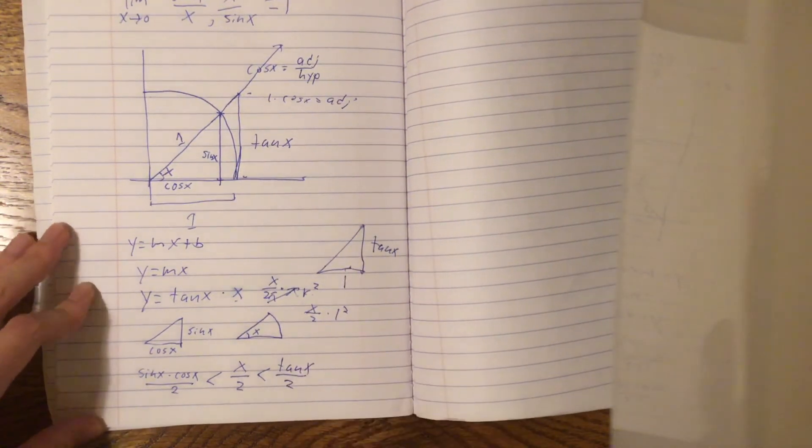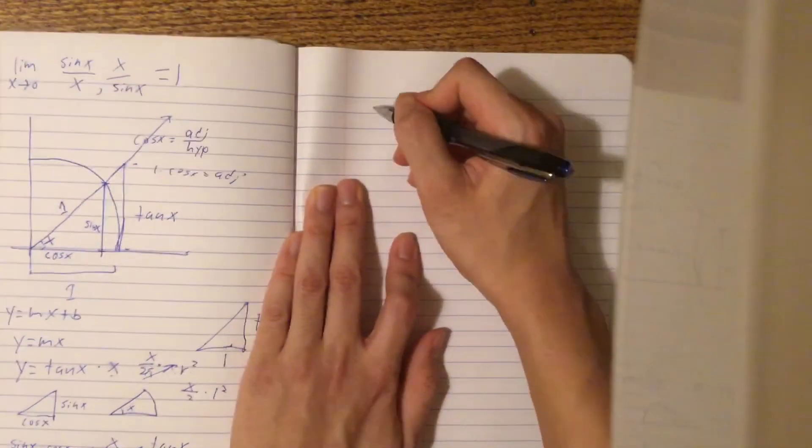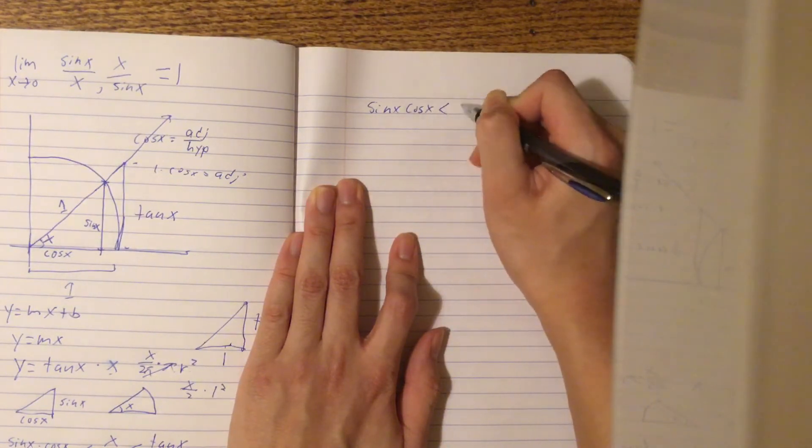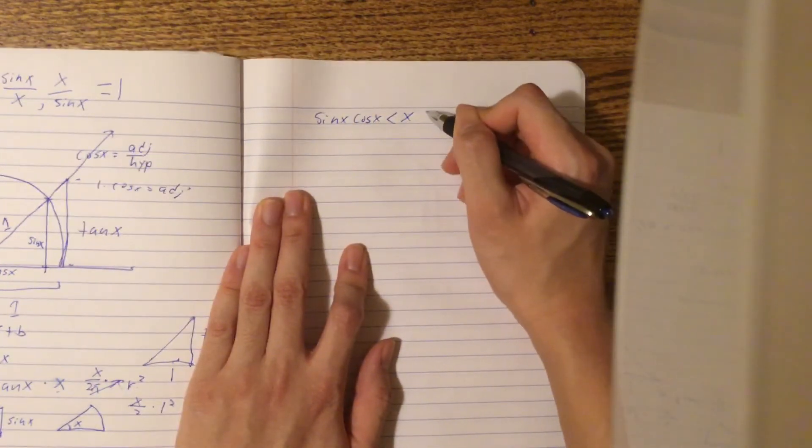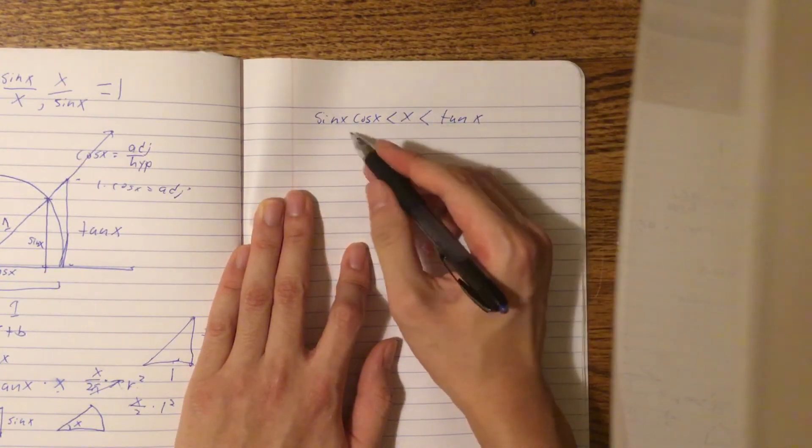Now, we can multiply 2 to the denominator of everything, so we get sine x cos x is smaller than x, and it's smaller than tan x.